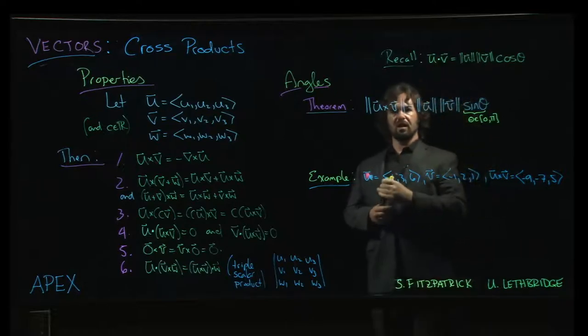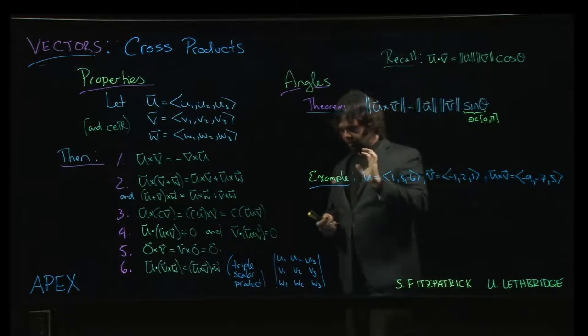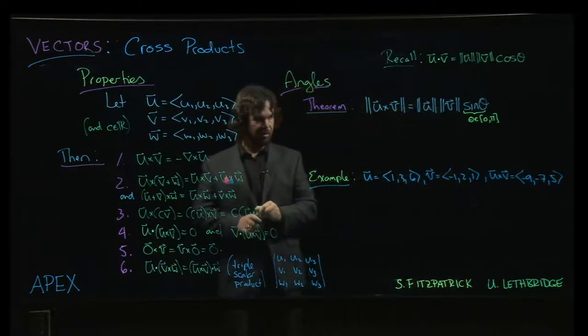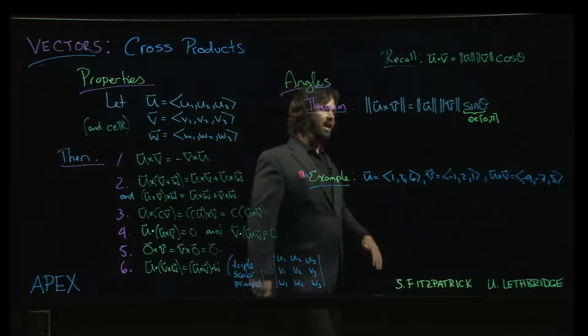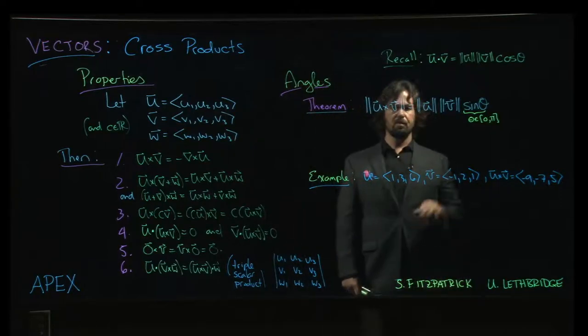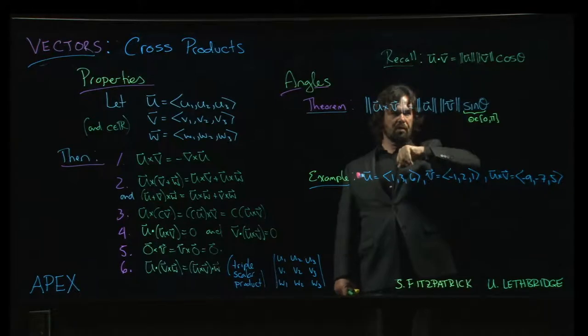And ultimately, what's going to happen is when you do the square of the magnitude of u cross v, you're going to get the magnitude of u squared is going to show up. The magnitude of v squared is going to show up. And the dot product is going to show up as well. And more or less what's going to happen if you go through the whole process and you simplify is you're going to apply this formula for the dot product,